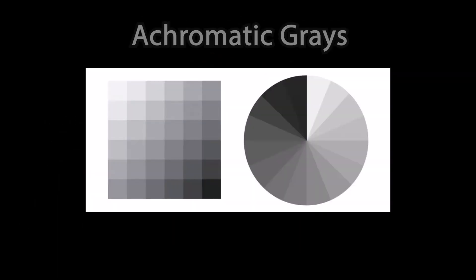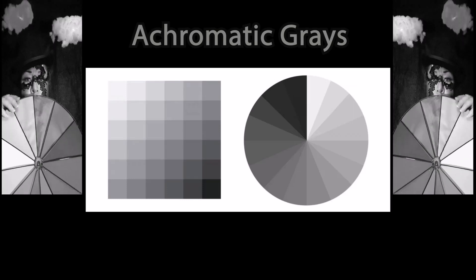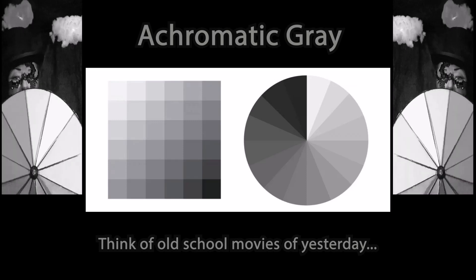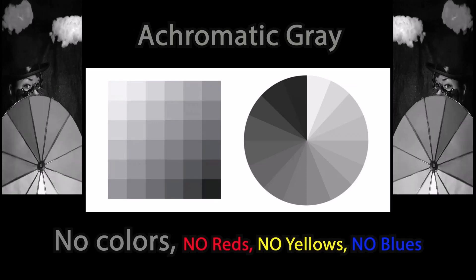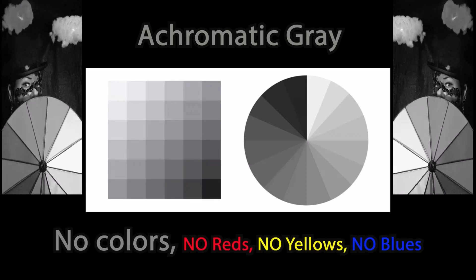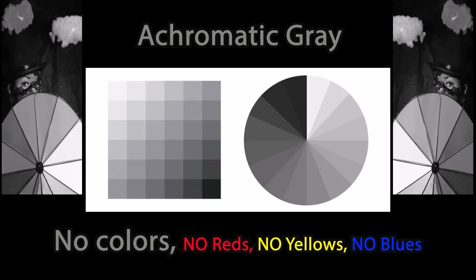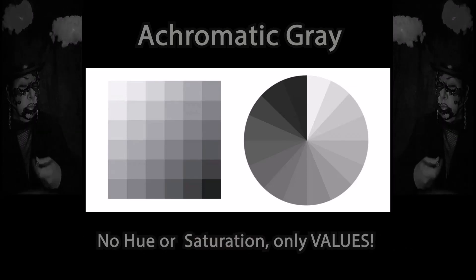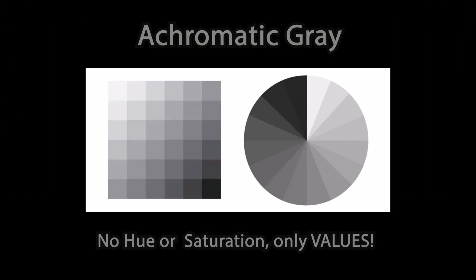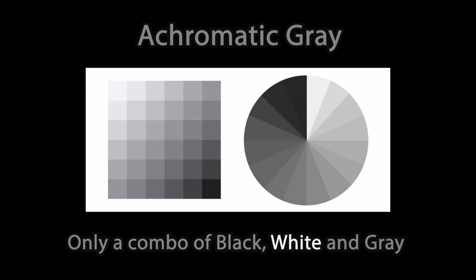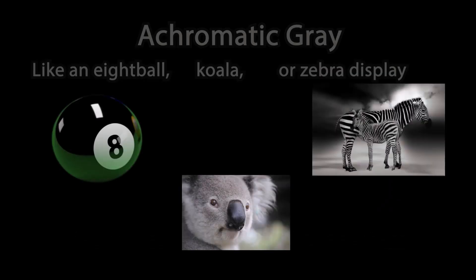Achromatic grays. Achromatic grays, think of old school movies of yesterday. No colors, no reds, no yellows, no blues. No hue or saturation. Only values. Only a combo of black, white, and gray. Like an eight ball, koala, or zebra display.